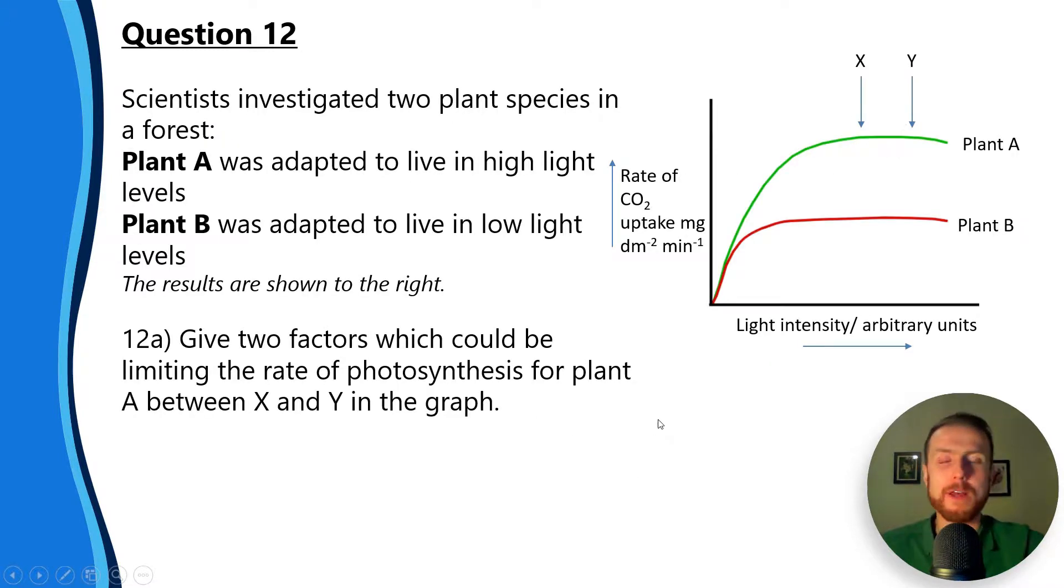Number 12: really common graph here. Scientists investigated two plant species in a forest. Plant A was adapted to live in high light levels, so understandably plant A is using more CO2, which means it's photosynthesizing at a faster rate. Because if we're measuring the rate of photosynthesis, we can either look at oxygen production or CO2 absorption. Plant B was adapted to live in low light levels and we can see it is lower - it plateaus at a lower rate. Obviously there's not as much light there so photoionisation can't occur as frequently or as quickly.